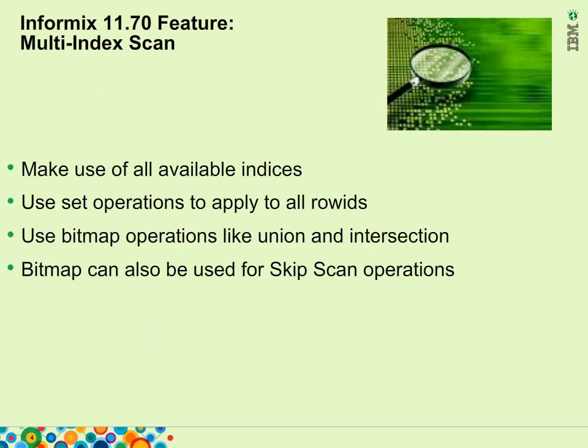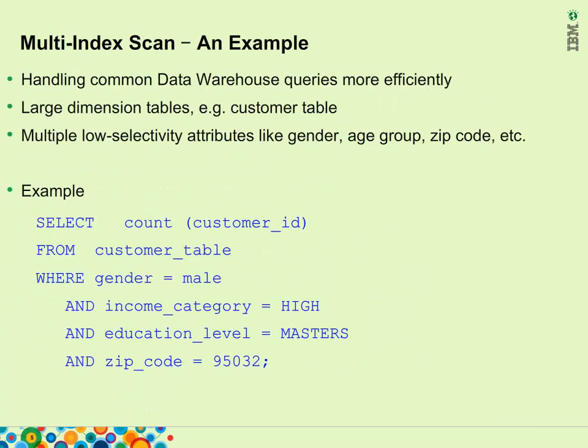On the query processing side of 11.70, we made some significant improvements in handling star schema queries. The first involves the use of multi-index scan. As an example, we look at a relatively simple query against a single table — the customer table. This is significant because it is a very common warehousing type of query that most systems designed for OLTP will not handle well. In particular, we are talking about low selectivity queries. Low selectivity in optimizer terms means that for a particular predicate or WHERE condition, it is not very selective, implying that many rows will qualify.